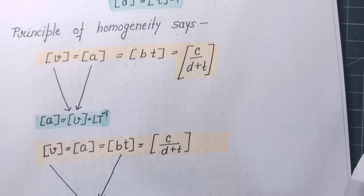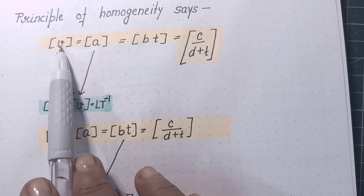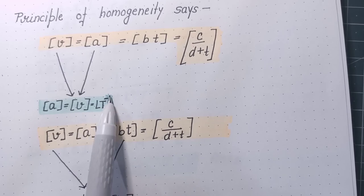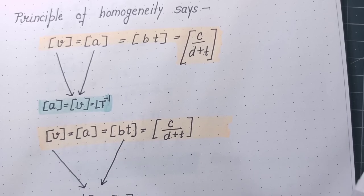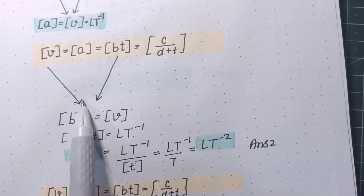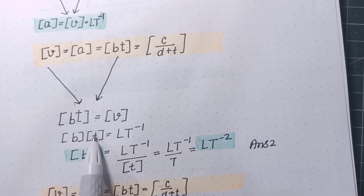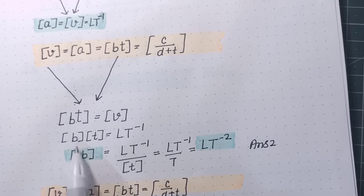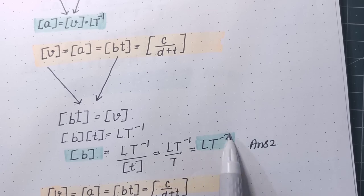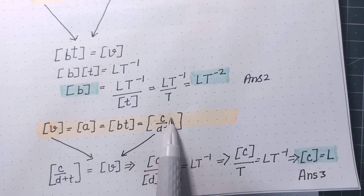So we have written here principle of homogeneity. Dimension of A should be equal to dimension of V, so A ka dimension LT⁻¹ ho gaya. Again using this principle, we equate these two dimensions. B into T ka dimension V ke dimension ke barabar hona chahiye. That means dimension of B and dimension of T multiplied should be LT⁻¹. Obviously dimension of B nikalne ke liye we take T to denominator. T ka dimension hai capital T, so dimension of B is LT⁻².